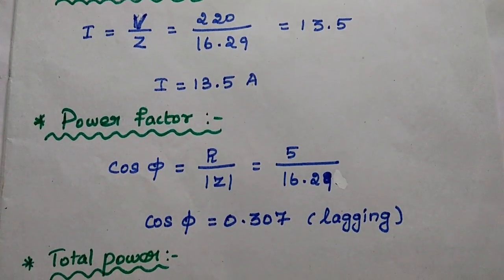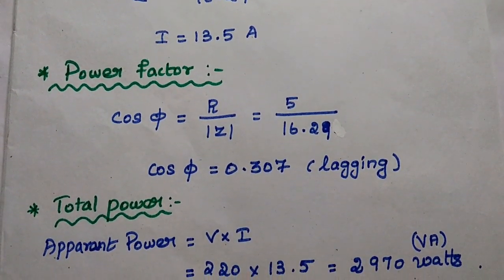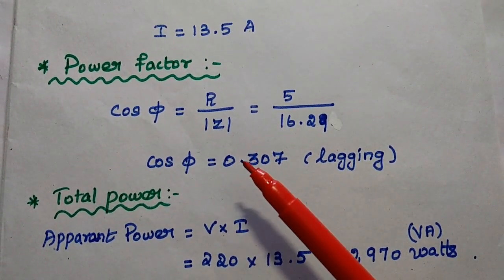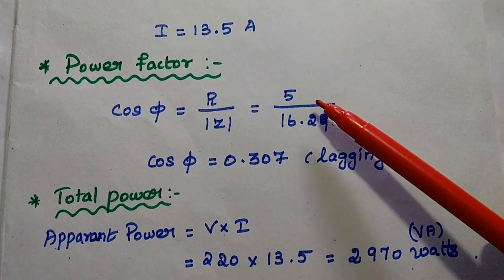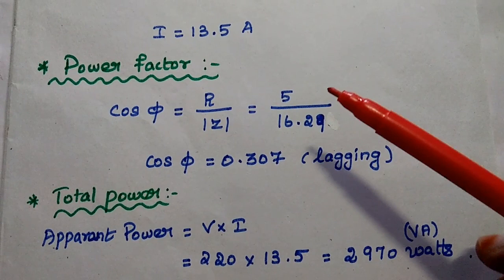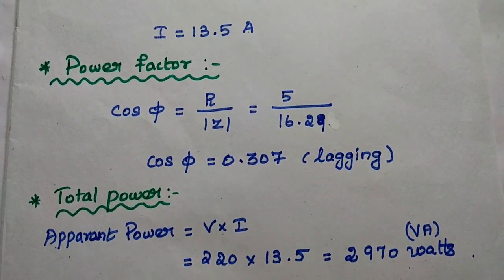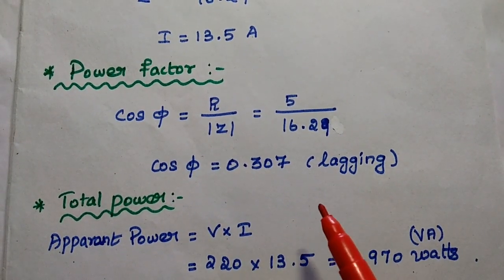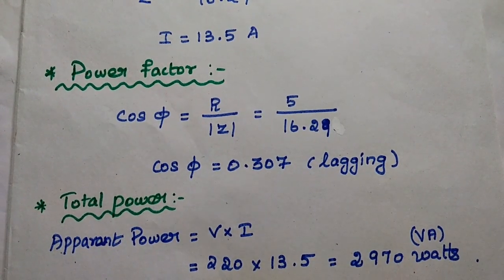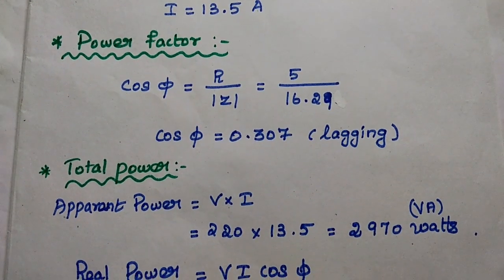Next we are going to find out the power factor. Cos phi is equal to the ratio of resistance to the magnitude of the impedance. Here the resistance value is 5 and the magnitude of impedance is 16.29, then we can get the answer as 0.307. The phase angle is 72.12 degrees, which means it is lagging with respect to the voltage, so the power factor is also lagging.